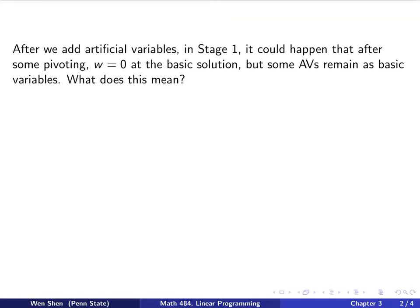Let's have some discussions. So after we add artificial variables to a LP problem in standard form in stage 1, it could happen that after some pivoting and the W is 0, at a basic solution. So it has reached the minimum. But then at the same time I see that some artificial variables remain as basic variables. So what does this mean?